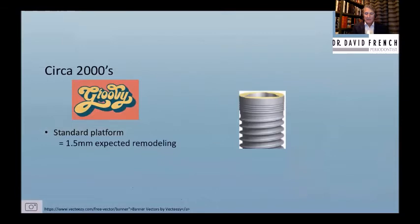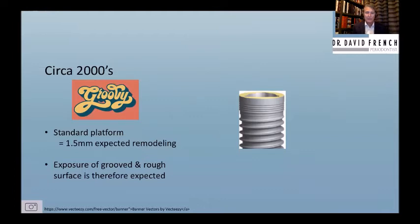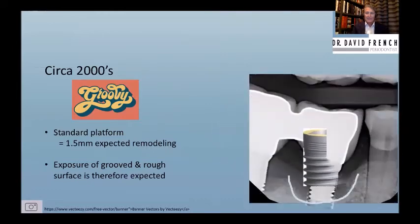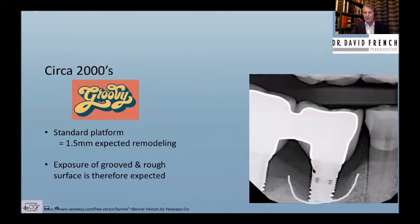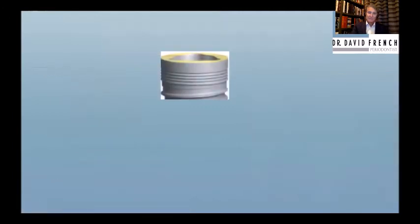We knew this circa 1997. In the 2000s, Brånemark Care came out with something called the Groovy — a butt joint connection with roughened grooves intended to hold bone. But it makes no sense because the micro-gap is a known phenomenon, and we know we'll get 1.5 mm of bone loss, meaning an exposed rough surface. I told the rep I would never place this implant. It predictably causes peri-implantitis, and this design was very damaging to the company's reputation, taking them from number one to number two implant company.